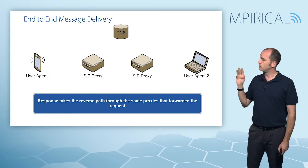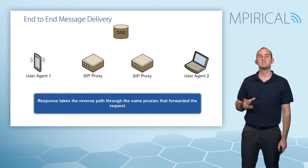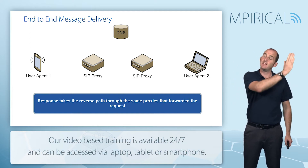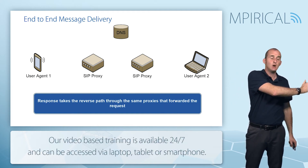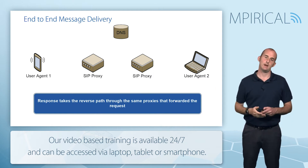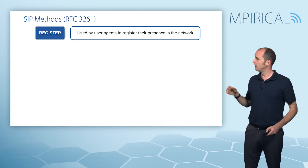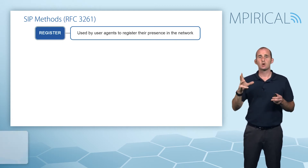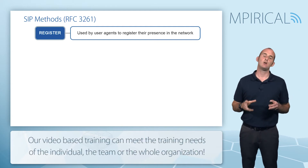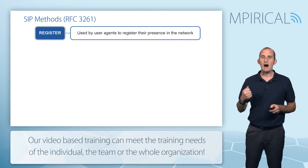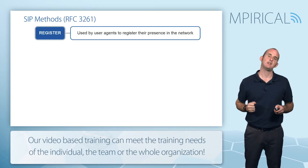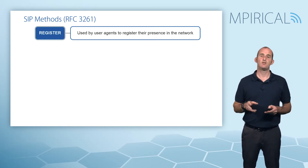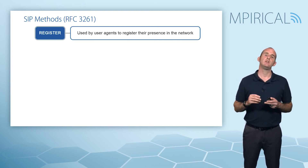The response takes the reverse path through the network, so any proxies which handle the request in the outbound direction will also see the response coming back. In terms of what those requests and responses might actually be, the requests will always be what are called methods. RFC 3261, the baseline SIP specification, introduced six different methods.